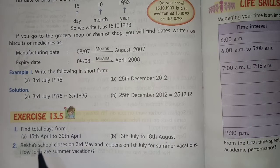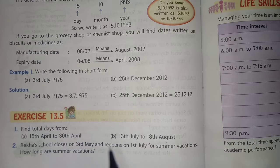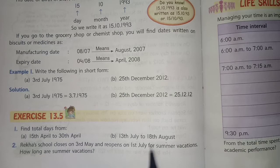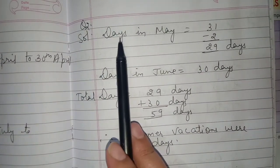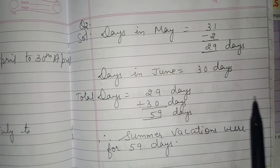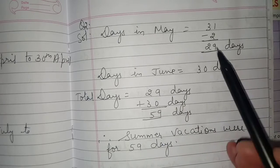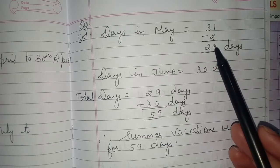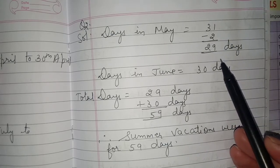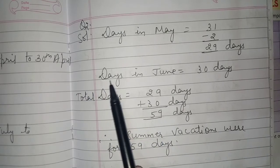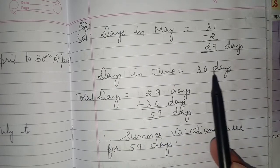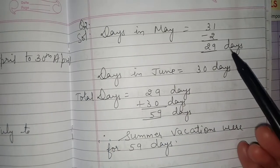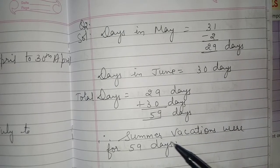Question number two: Rekha's school closes on 3rd May and reopens on 1st July for summer vacation. The last day before vacation and first day after are given. Days in May: vacation starts from 3rd May, so subtract 2 days from 31 — that's 29 days of vacation in May. Full June month counts for vacations: 30 days. So 29 plus 30 equals 59 days of summer vacation.